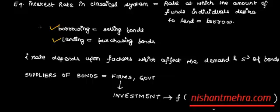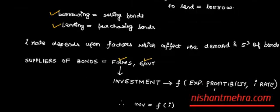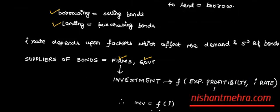There are two suppliers of bonds: firms and government. As far as the government is concerned, we assume there is an exogenous supply of bonds — it is given and not changing.